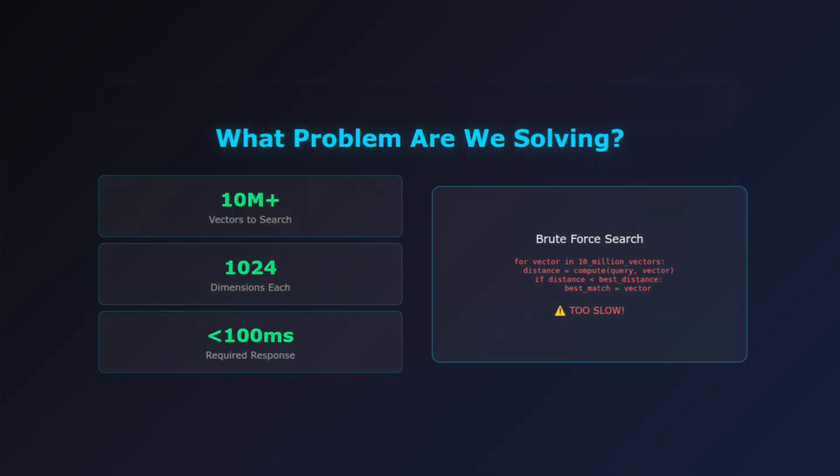This is where vector indexing comes in. Instead of checking every single vector, we pre-organize our data into smart data structures that let us find approximate nearest neighbors in logarithmic or sublinear time. The key insight? We're willing to trade a little bit of accuracy for massive speed improvements. This tradeoff between speed, memory, and accuracy is at the heart of every indexing strategy we'll explore today.